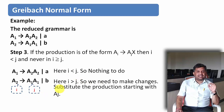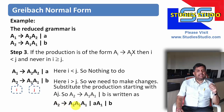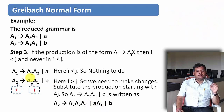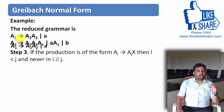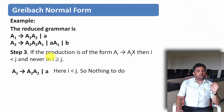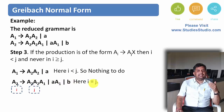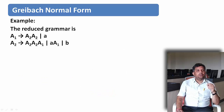We substitute the production starting with Aj (which is A1) into A2. In place of A1, we substitute the production for A1, giving: A2 derives A2A2A1 or AA1 or B. Now the reduced grammar is: A1 derives A2A2 or A (no change needed, i < j), and A2 derives A2A2A1 or AA1 or B. Looking at A2, the equal-to condition appears — i equals j — meaning there is a left recursion that we need to remove.